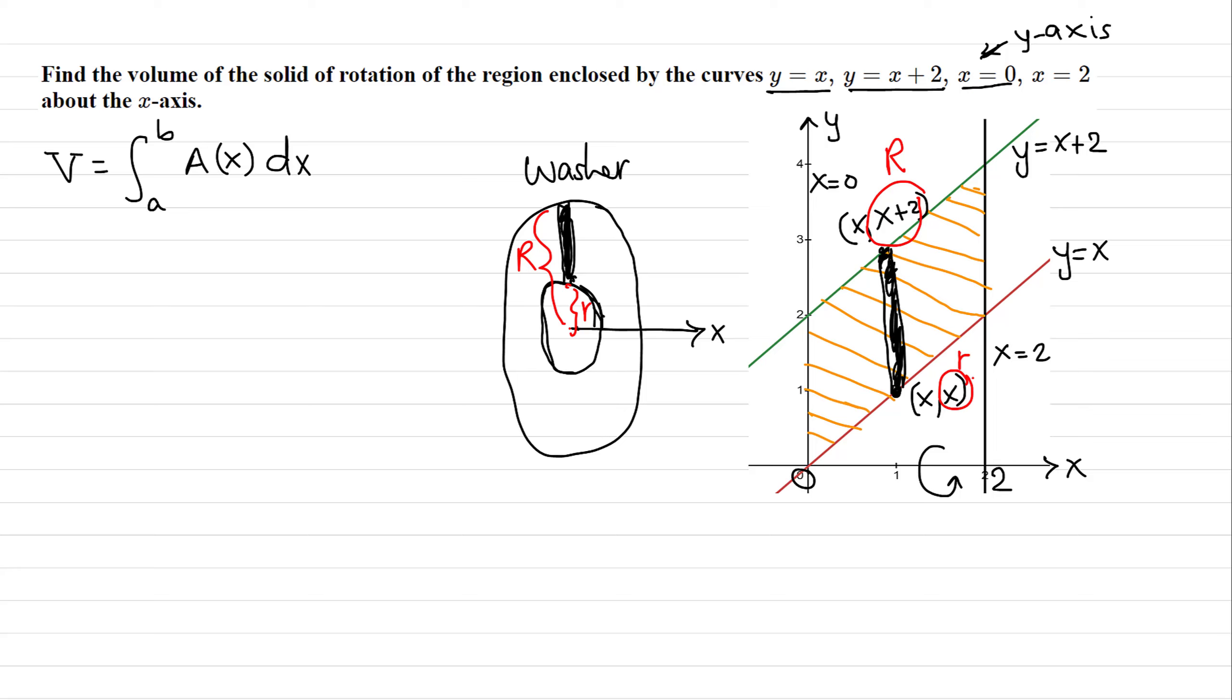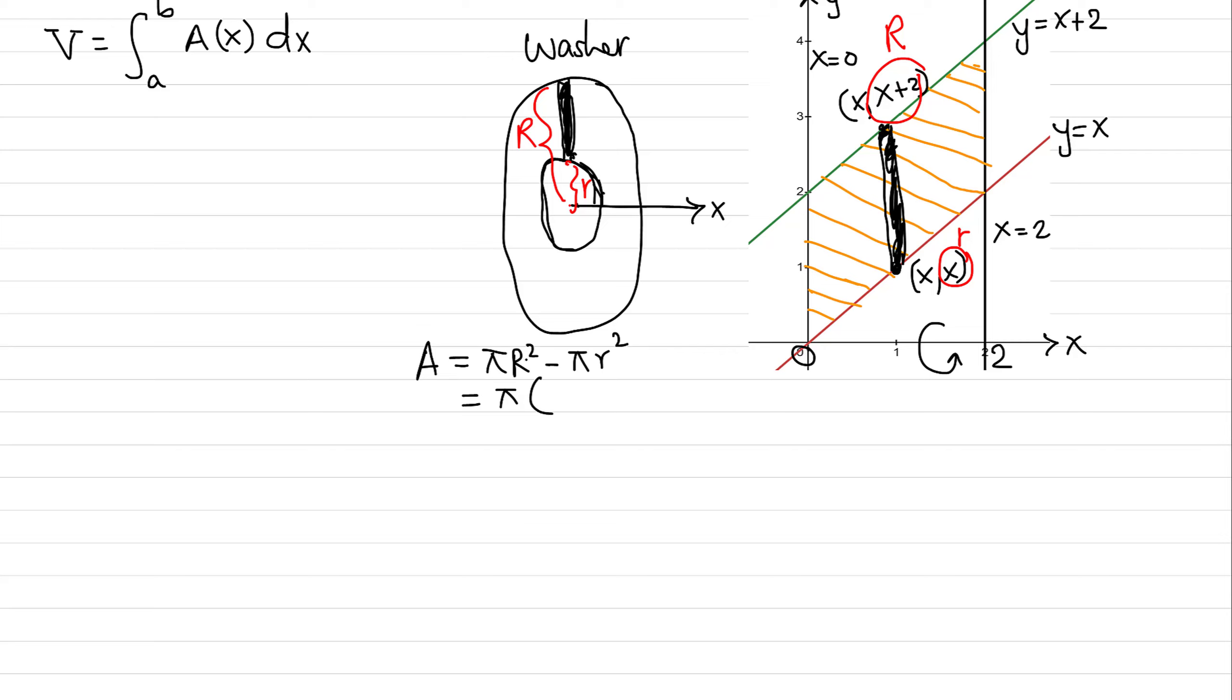The area of this washer is π times R squared minus the hollow inside, π times r squared. We can factor π out from both, so it's π times [R squared minus r squared]. R is (x plus 2) quantity squared, and the inside r is just x, so x squared.